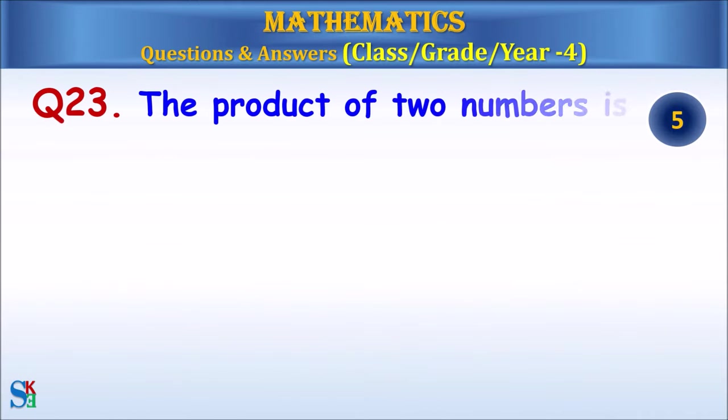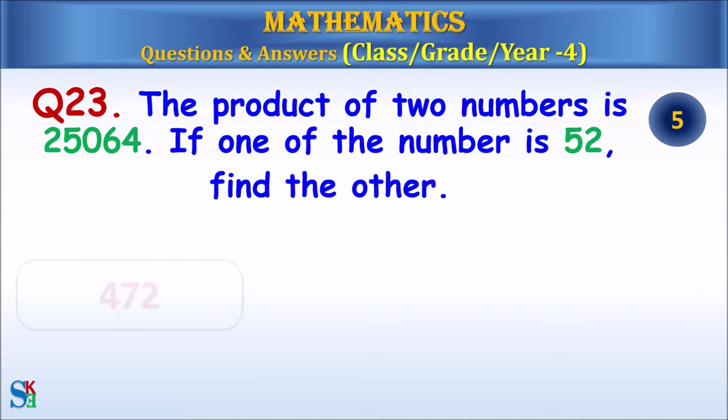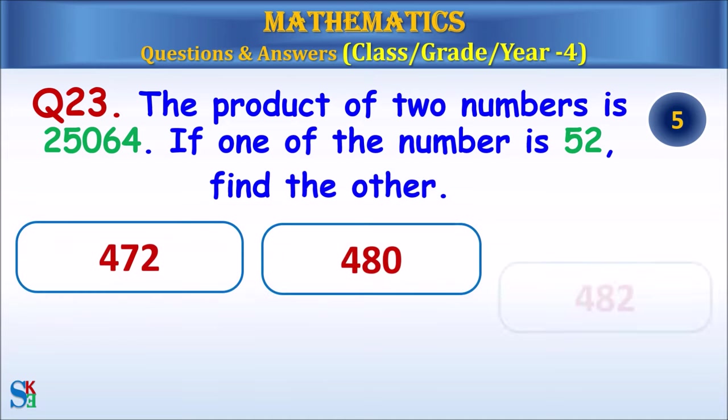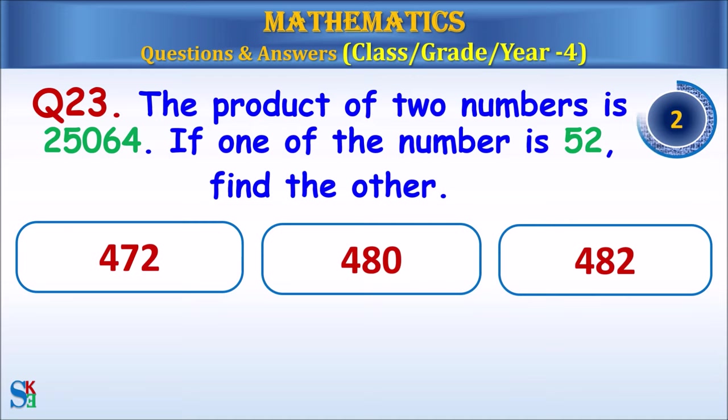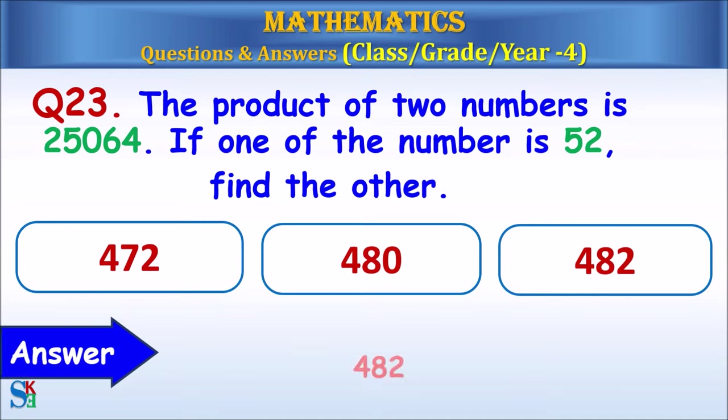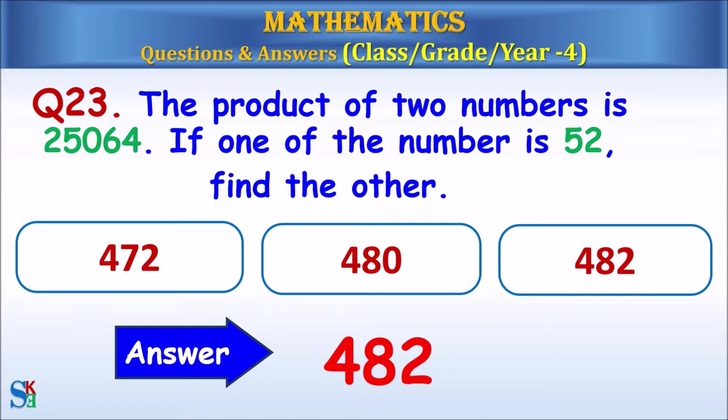Question 23: The product of two numbers is 25,064. If one of the numbers is 52, find the other. The answer is 482.